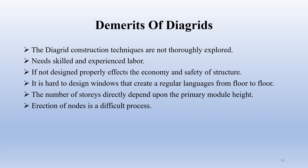The demerits of the diagrid system are as follows: diagrid construction techniques are not thoroughly explored and people are still working and learning about it; it requires skill and experience; if not designed properly, it affects the economy and safety of the structure; it is hard to design windows that create a regular language from floor to floor; the number of stories is directly dependent on the primary module height; and the erection of nodes is also a difficult process.